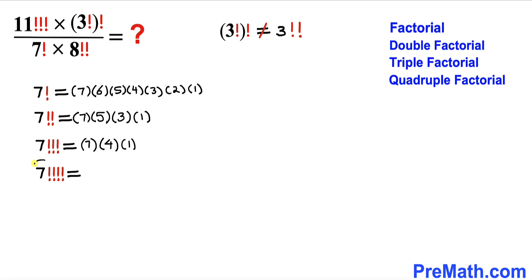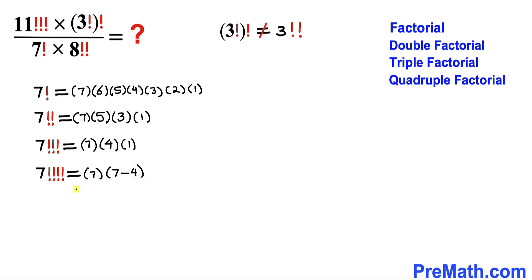Likewise, let's take care of 7 quadruple factorial. Starting at 7, we subtract 4 each time: the next term would be 7 minus 8, which is negative 1, so we stop. Therefore, 7 quadruple factorial is simply 7 times 3. The common difference is 4.